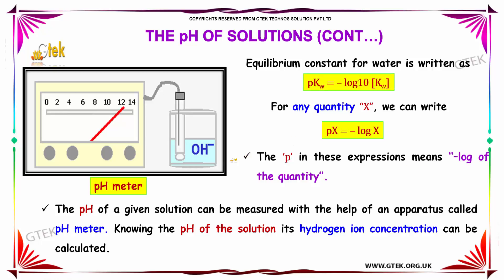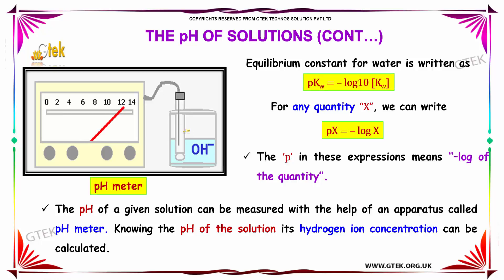The pH of a given solution can be measured with the help of an apparatus called a pH meter. Knowing the pH of the solution, its hydrogen ion concentration can be determined.